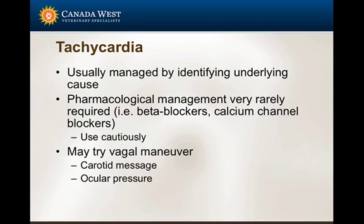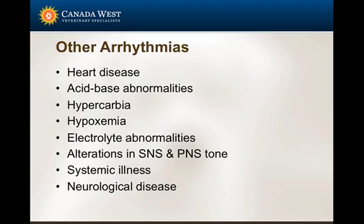Rarely — very rarely — have I had to treat with a specific drug to bring down heart rate. The drug I'd typically use is esmolol. Usually you can find the underlying cause, treat it, and manage it. In one case with suspected ventricular tachycardia, we performed vagal massage on the dog, the heart rate came down, we broke the ventricular tachycardia, and then could see it was atrial fibrillation.